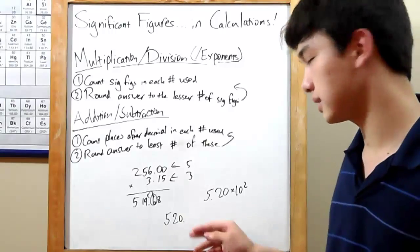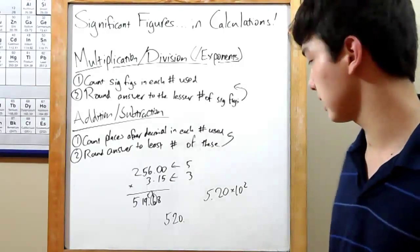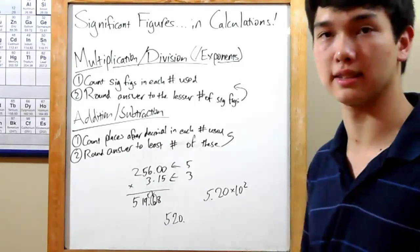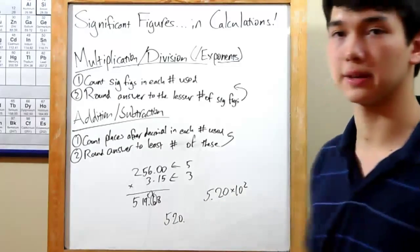You see, writing it like this leaves that decimal point at the end, and it's not as likely to be noticed as when it's in the middle here in scientific notation. So, when in doubt, scientific notation.